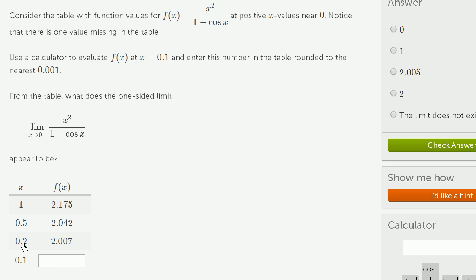Then when we get even closer to 0, at 0.2, f(x) is 2.007. And so I'm guessing when I'm getting even closer, it's going to be even closer to 2 right over here, but let's verify that.